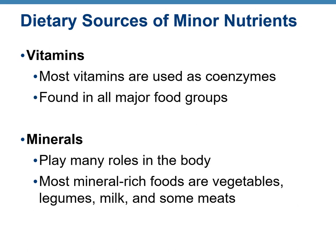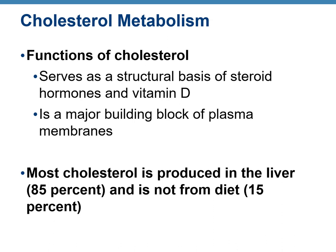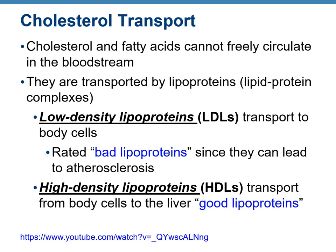Vitamins and minerals are obtained from fruits and vegetables and play many important roles. Cholesterol serves as starting material for all steroid hormones and vitamin D, and is a component of the plasma membrane in every cell. About 85% of cholesterol is produced in the liver — only 15% comes from diet. Cholesterol and fatty acids need lipoproteins to travel in the bloodstream. Low-density lipoproteins (LDL) transport cholesterol to body cells and are considered bad because they can cause atherosclerosis. High-density lipoproteins (HDL) are good and transport cholesterol from body cells back to the liver.